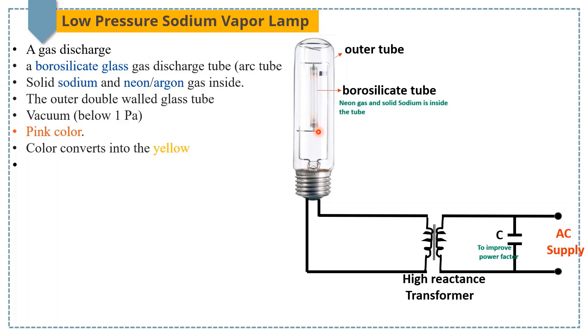This process takes 10 to 12 minutes until the lamp reaches its full brightness and the lamp ultimately produces yellowish monochromatic light at 589 nanometer.